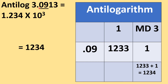Now we shall find out the anti-log of 3.0913. Here 3 is the characteristic, and after the decimal we have 0913 as the mantissa. After the decimal we take two digits: 09. In the row of 0.09 under column 1 in the anti-log tables — why 1? Because after 0.09 the next digit is 1. The number found is 1233. Under mean difference, column 3, the number is 1, so add 1 to 1233, giving 1234.